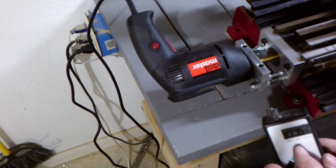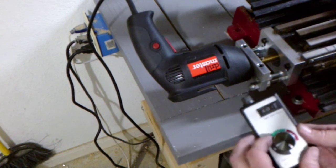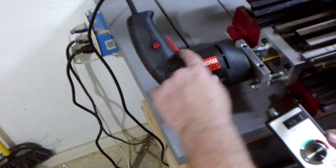To reverse direction, switch off the controller, unlock the trigger, and change the direction switch on the drill.